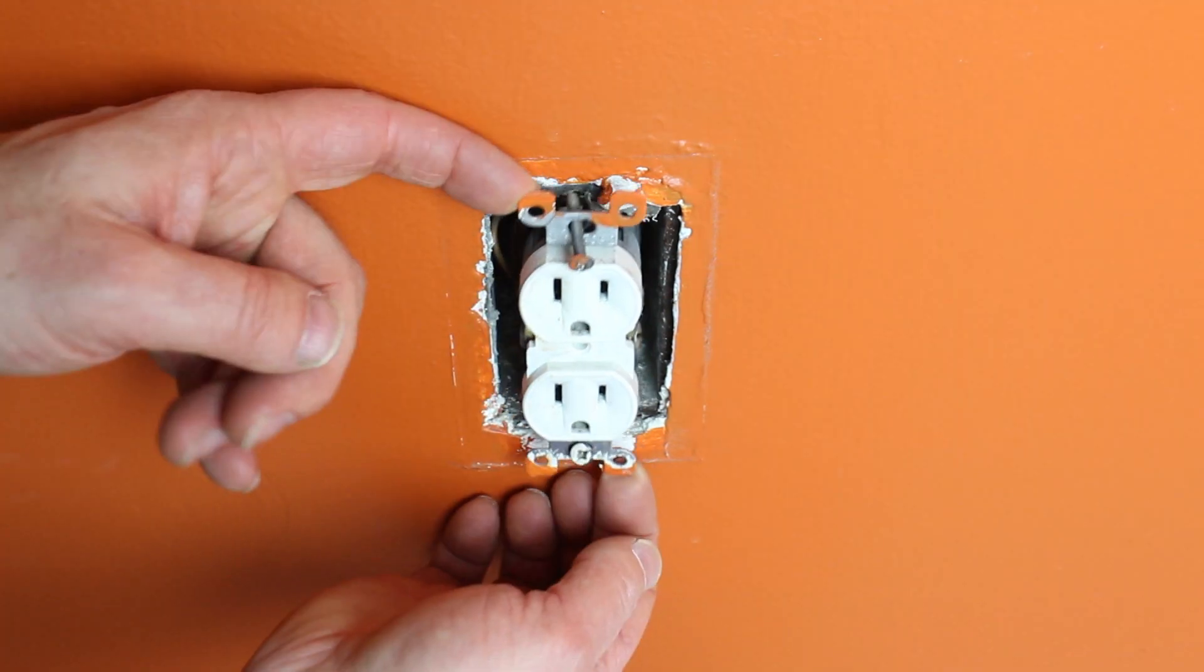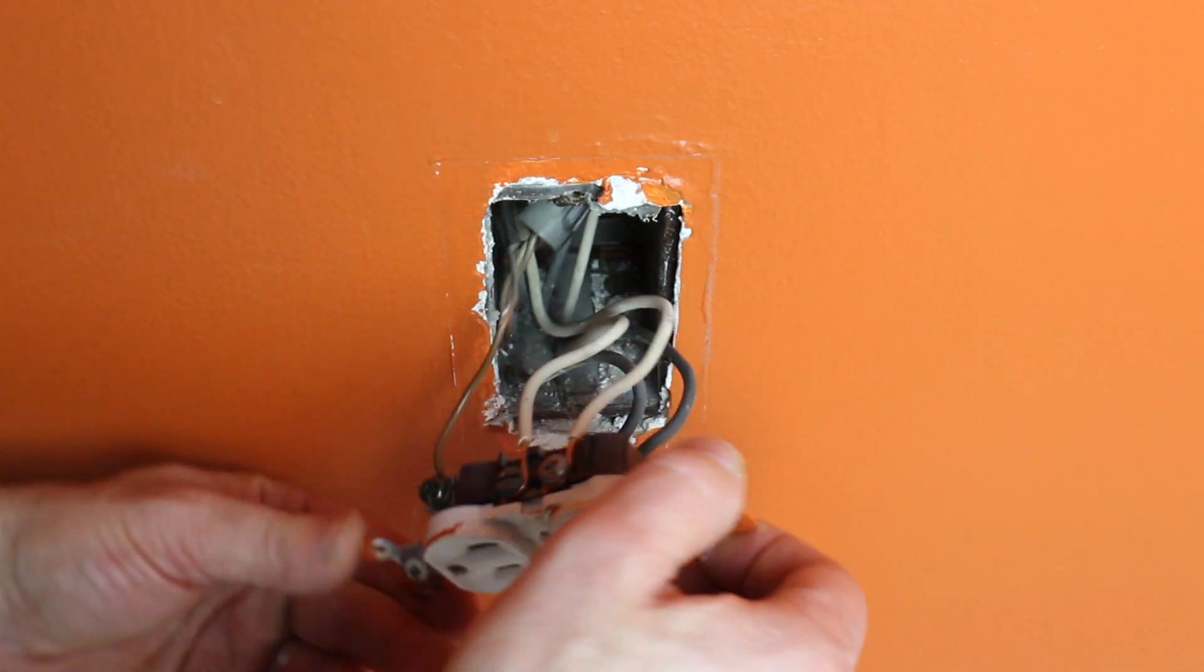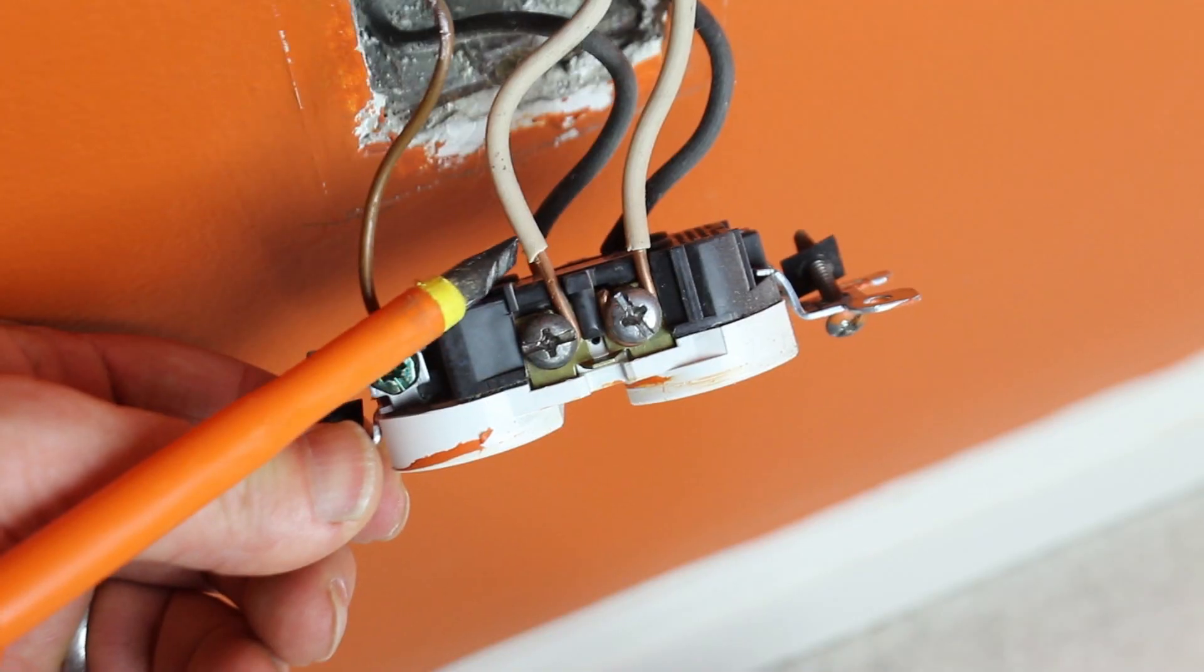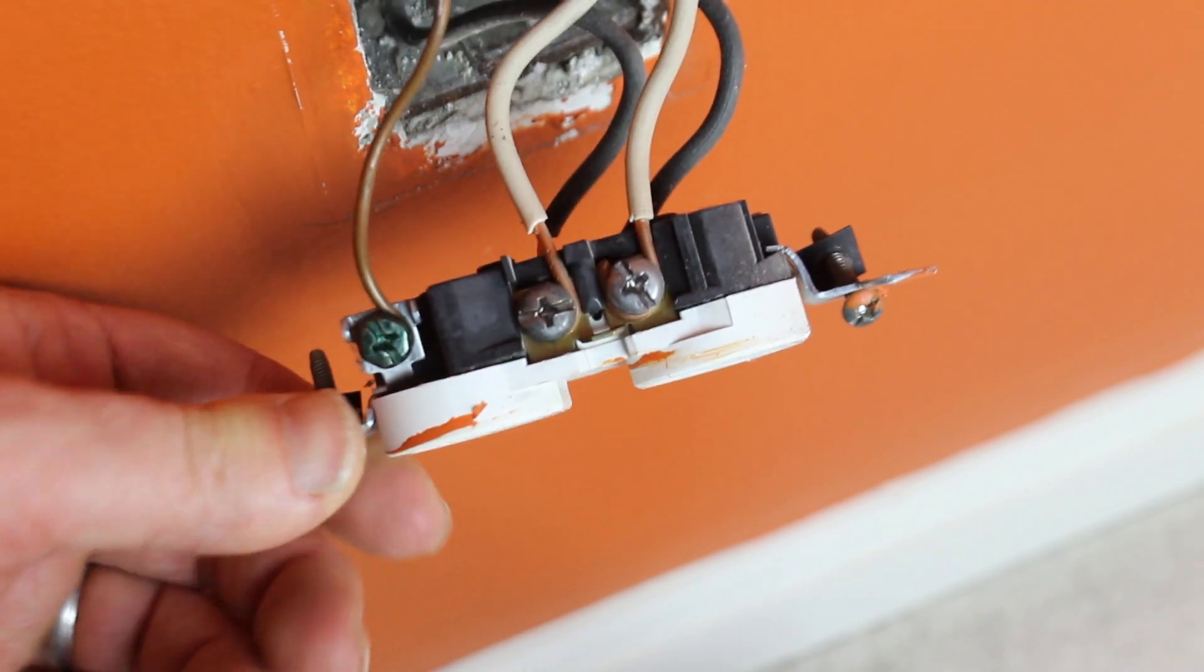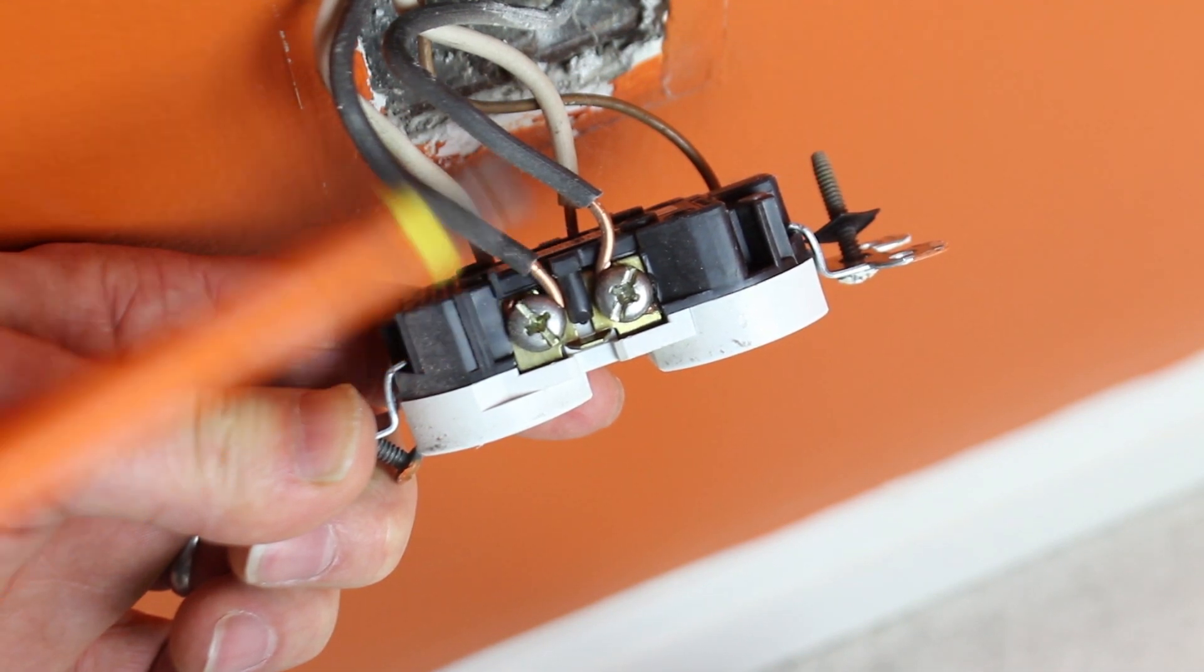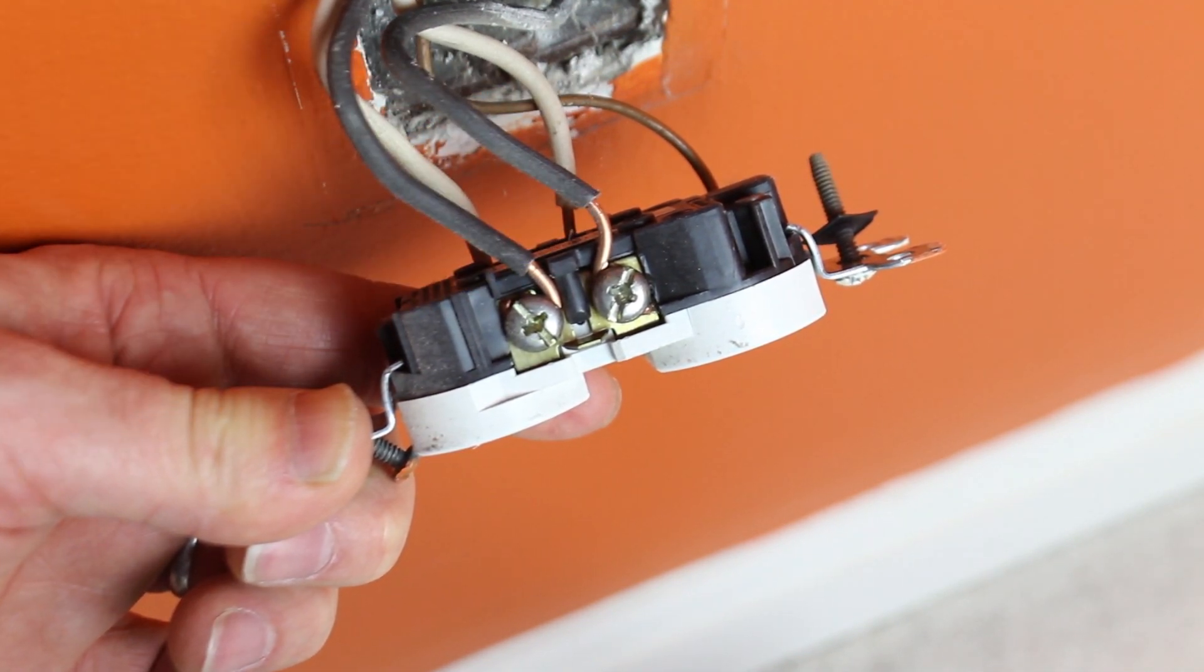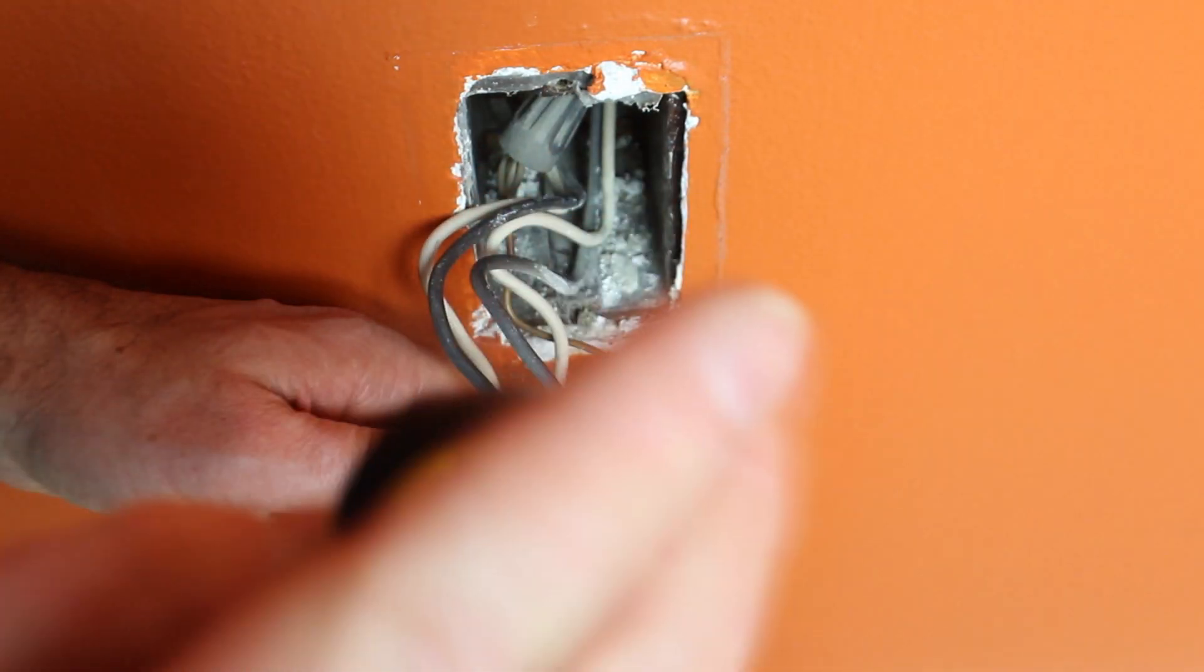Double check that the electric goes off with the voltage tester. Pull the outlet out with your hands using the tabs. Then, as you can see here, I want to show you the insulation is stripped off too much from these wires. The insulation, when it's stripped off too much, exposes too much copper and the copper wire could touch the electrical box, creating an electrical problem.